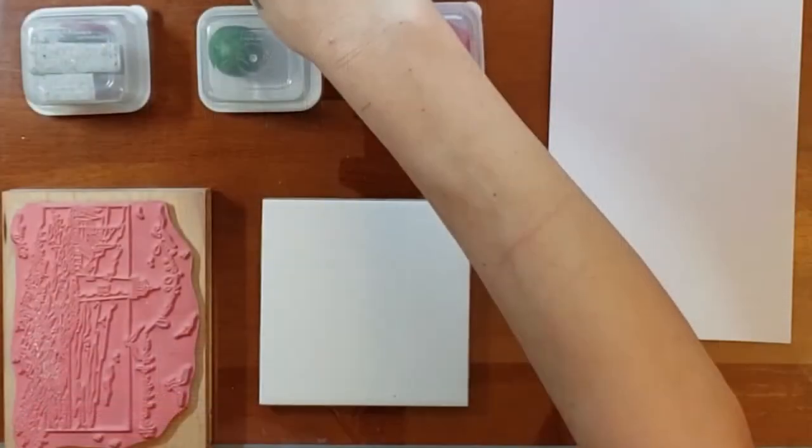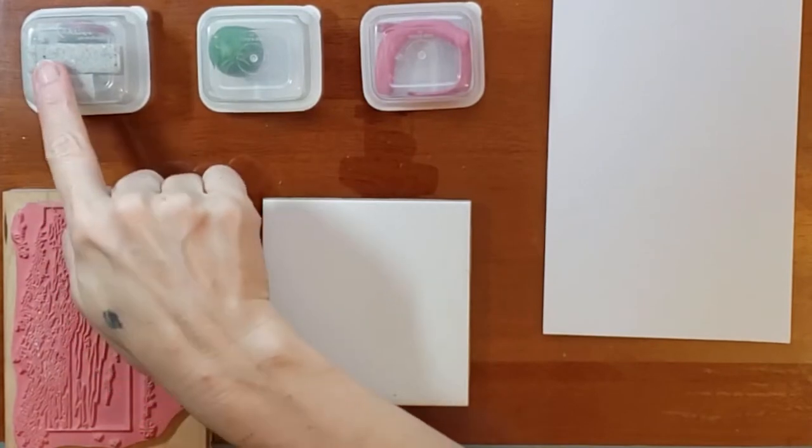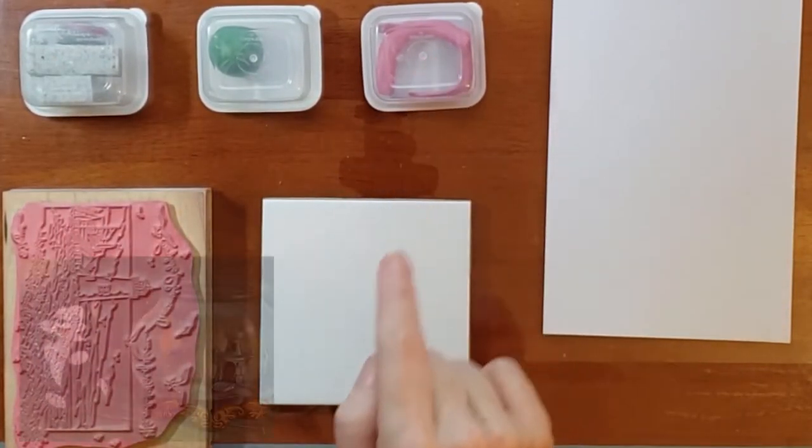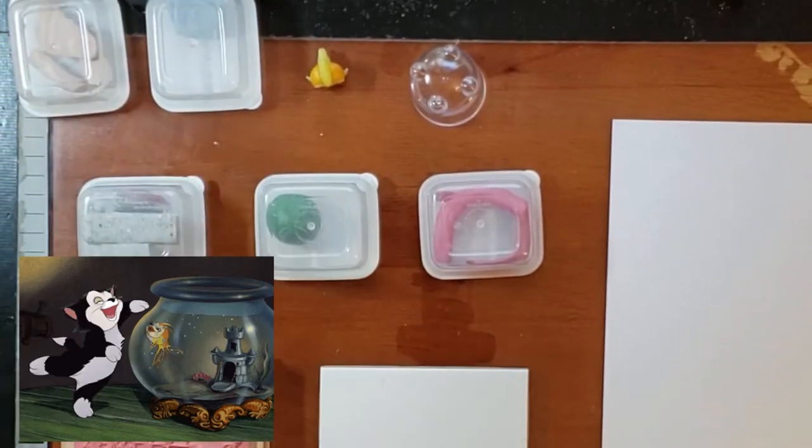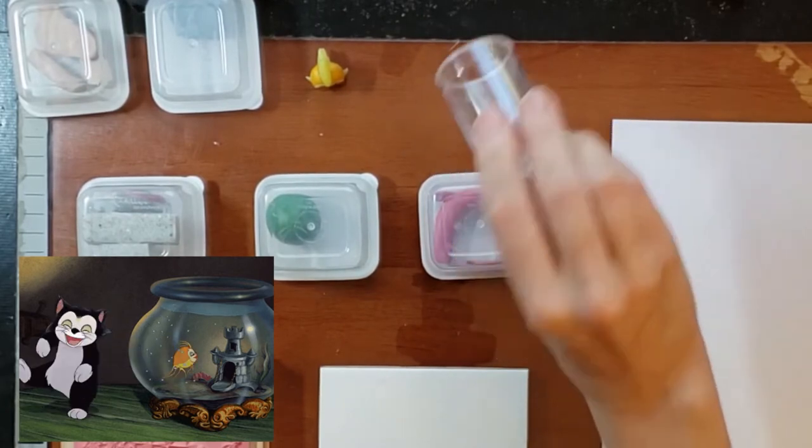So first, to make the decorations for the tank, I used polymer clay. I had some extra green, red, and gray granite. I looked at reference photos of Cleo's bowl and she had a little coral, a little plant, and a castle.